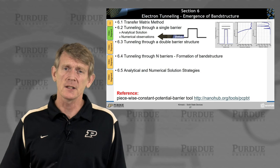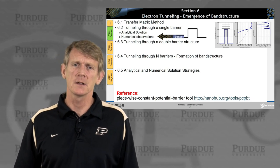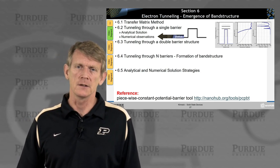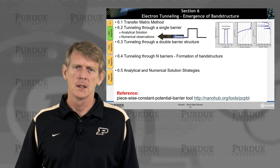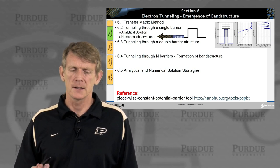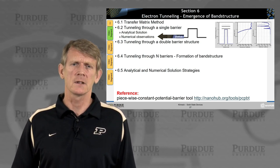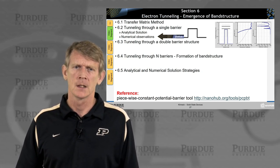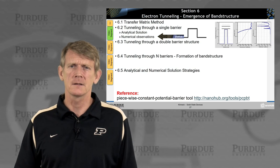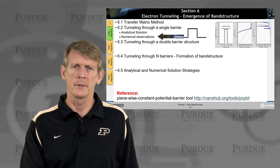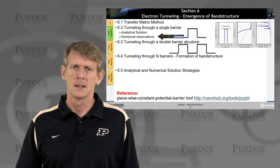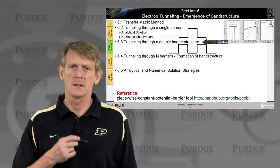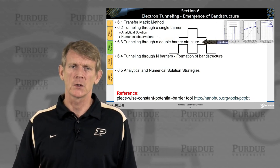These are the numerical observations we can see on a single barrier structure. I gave you analytical solutions. I invite you to duplicate and calculate those solutions as an exercise. In the next segment, we'll talk about a double barrier structure like this and study its effects there. Thank you.